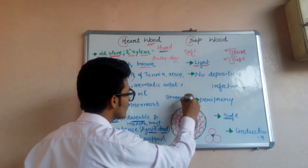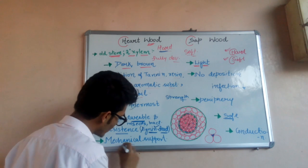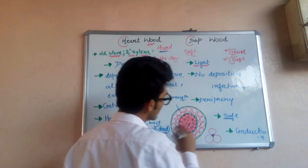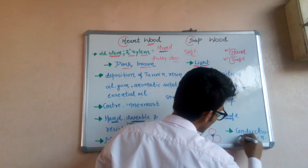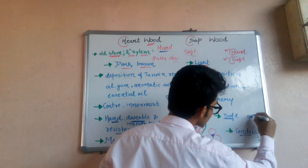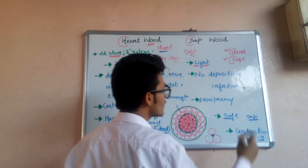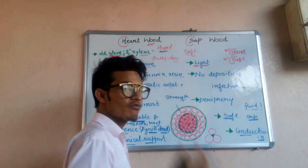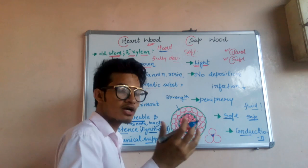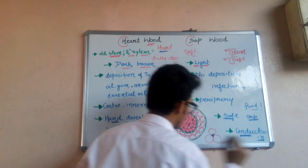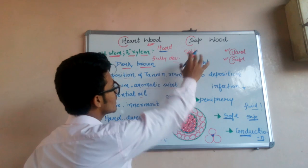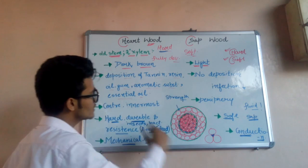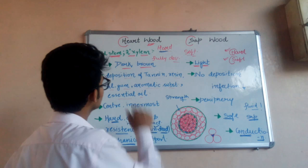Since hardwood is hard, more resistant, and has more strength, it provides mechanical support to the plant. However, sapwood has more intercellular space, so it helps in the conduction of sap — a nutritive fluid in plants that transports from one part of the plant body to another. The conduction of sap is done by the outer layer, the sapwood, while mechanical strength is provided by the hardwood.